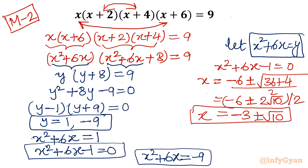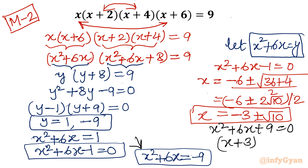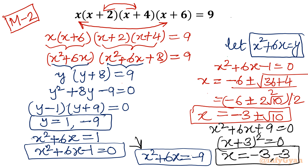Now for the second quadratic equation: x² plus 6x equal to minus 9, giving x² plus 6x plus 9 equal to 0. This is a perfect square: (x plus 3)² equal to 0. So x equals minus 3 and minus 3, that is, x equals minus 3 with multiplicity 2. Method number 2 is done.